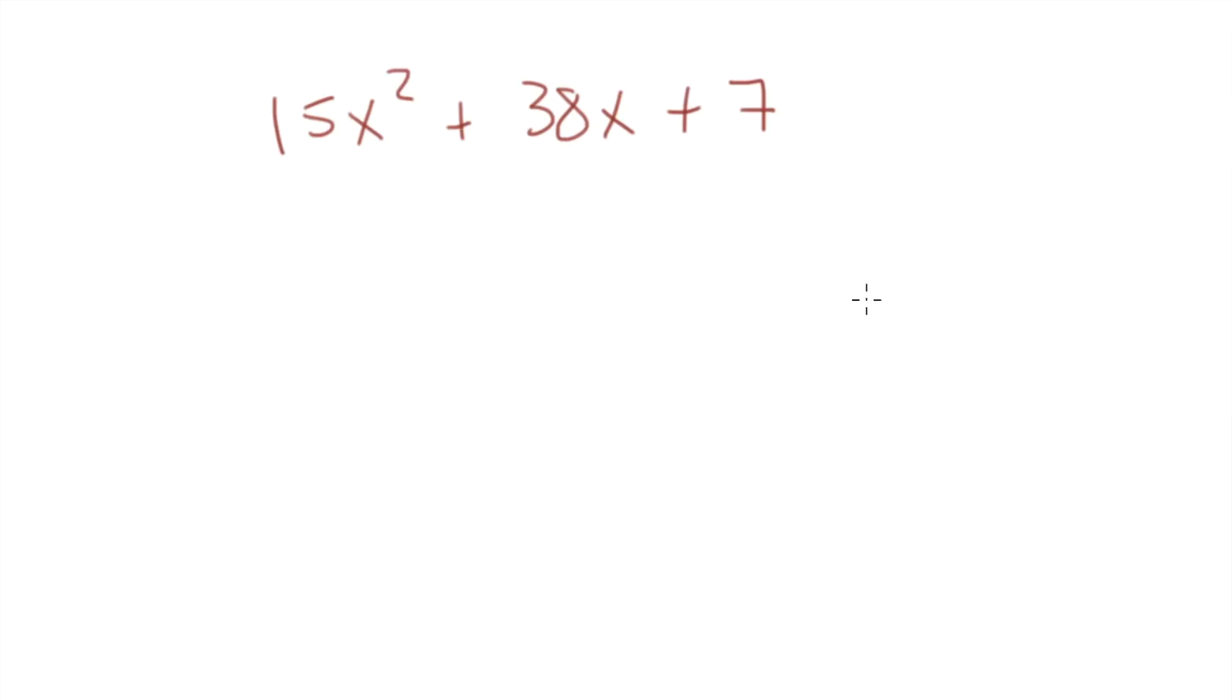15x squared plus 38x plus 7. So let's turn this into the factor game: 15, 7, and 38. And it breaks down into 3 and 5 and 7 and 1. Wait, that won't work. It's 1 and 7. Because remember, it has to be able to add up to 38. Take the diagonals: 3x plus 7 on our first diagonal times 5x plus 1. And that, my friends, is the factor game. Now go in peace and dominate math.